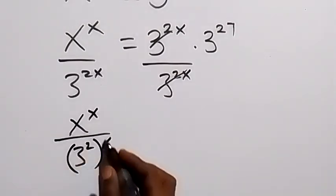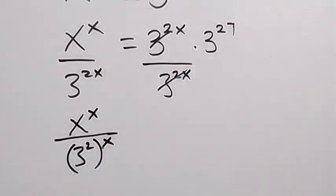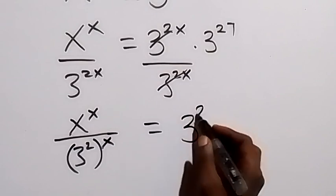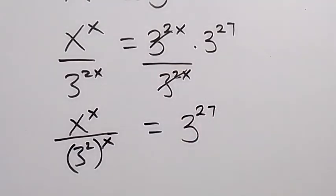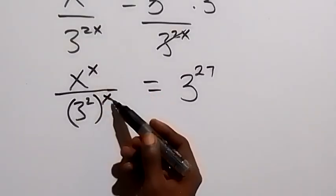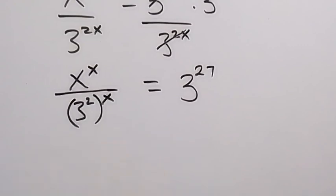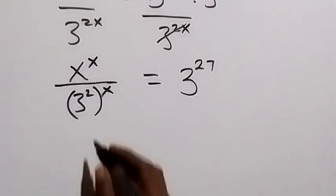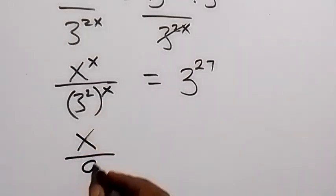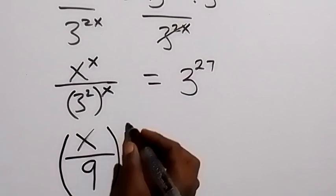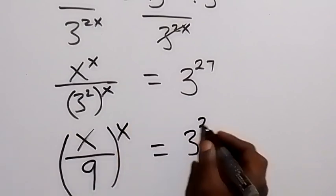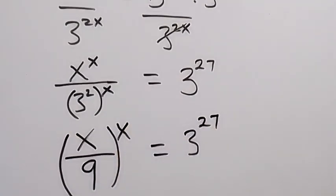We can separate this from the law of indices, which equals 3 raised to power 27. We have a power of x, so we can take it out from the law of indices, and this can be written as x over 3 squared — which is 9 — raised to power x, which is equal to 3 raised to power 27.